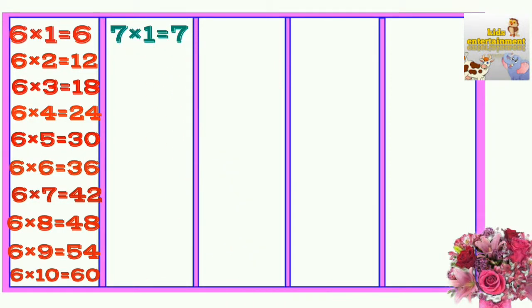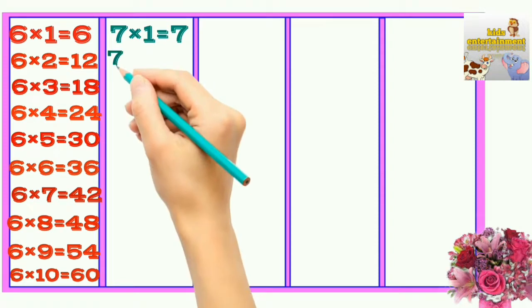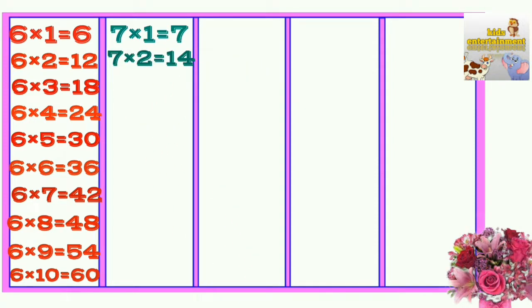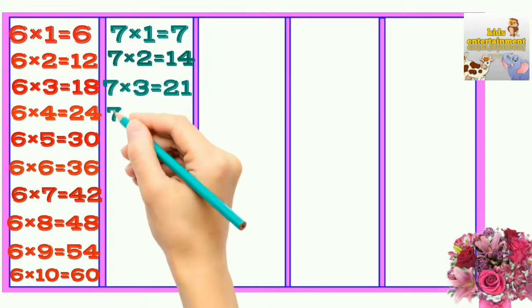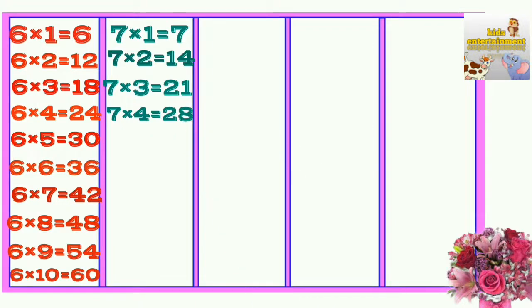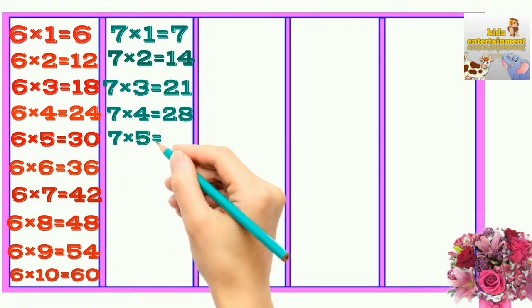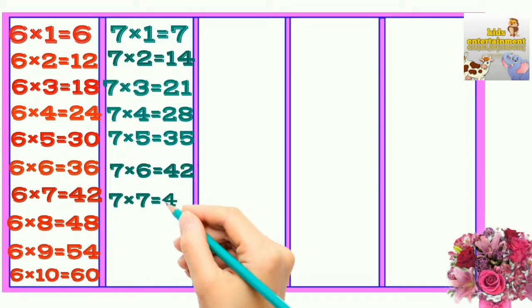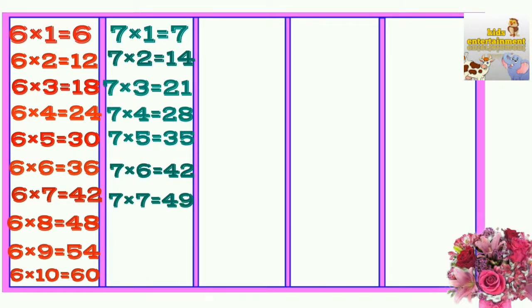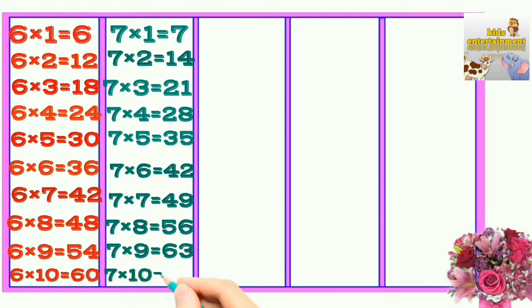7×1=7, 7×2=14, 7×3=21, 7×4=28, 7×5=35, 7×6=42, 7×7=49, 7×8=56, 7×9=63, 7×10=70.